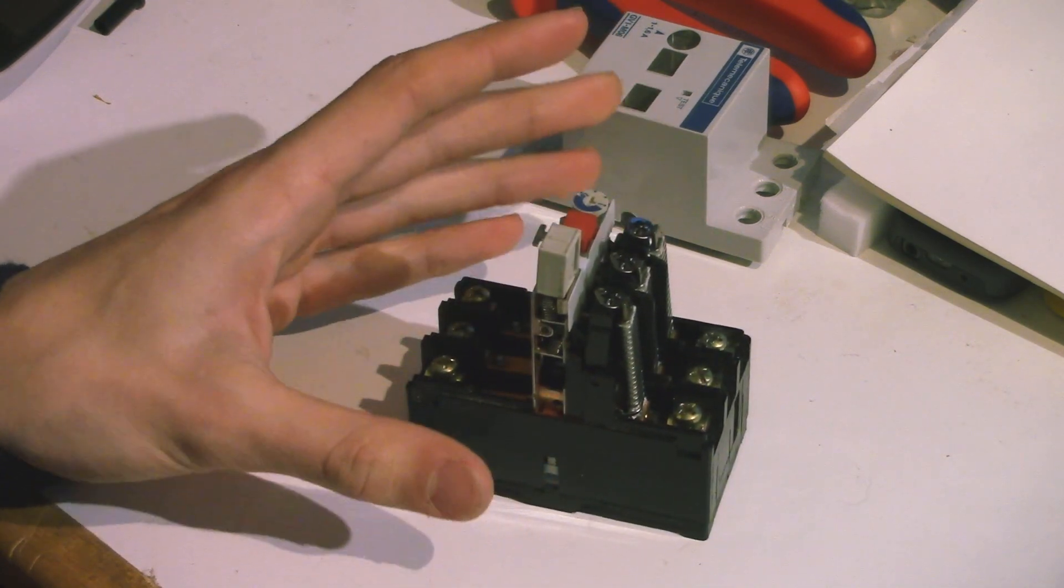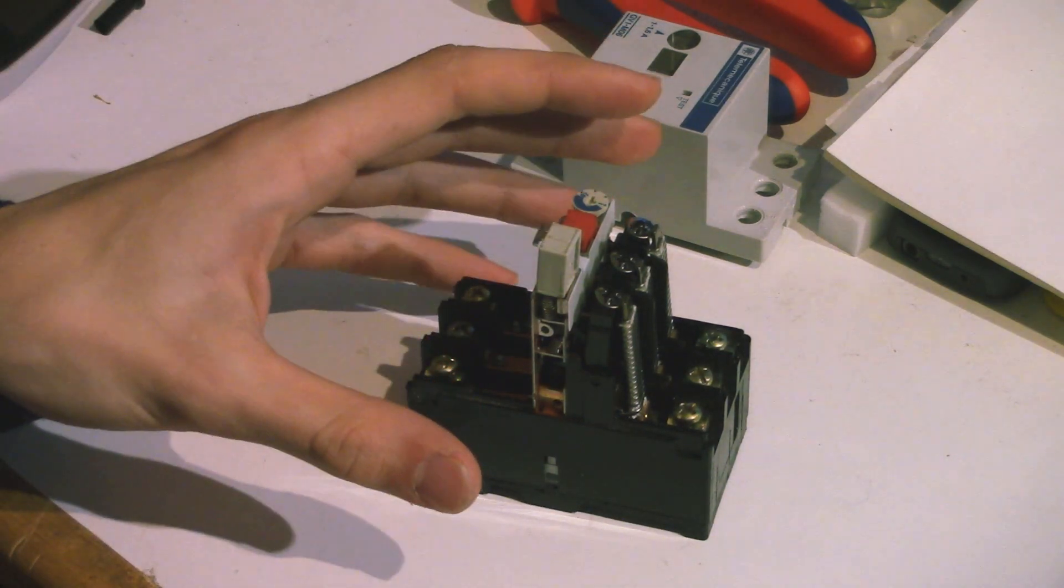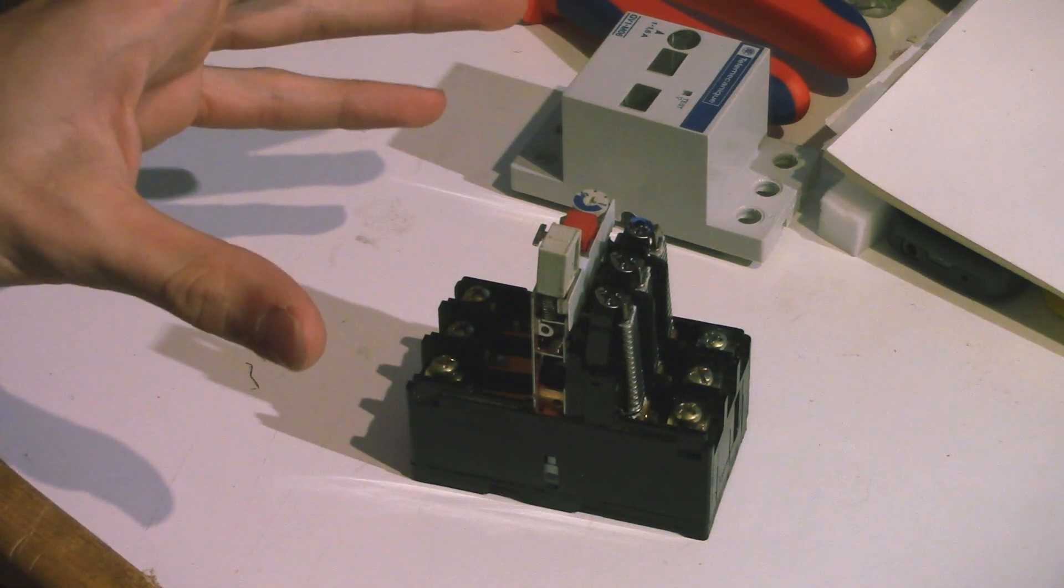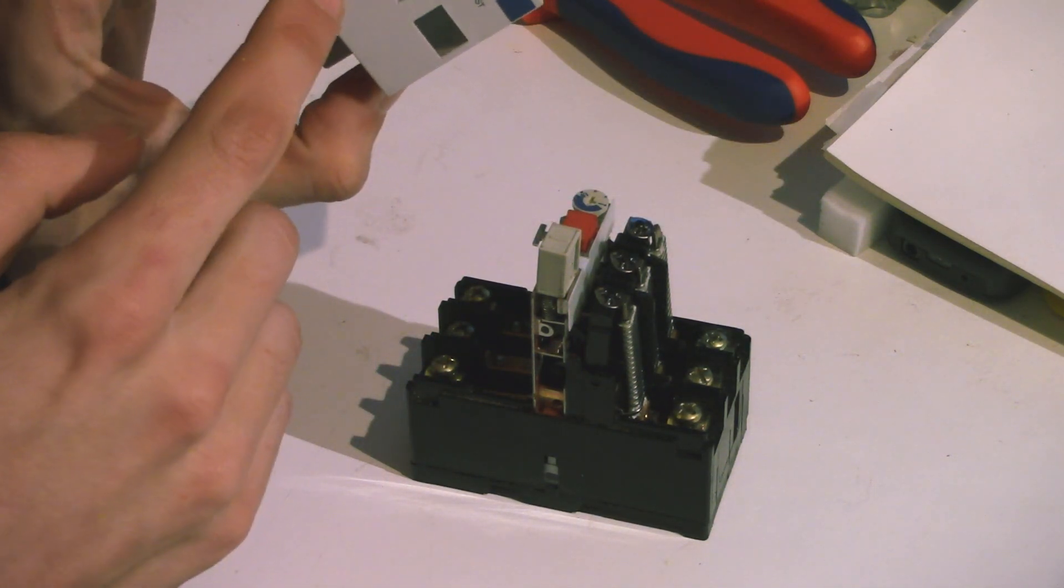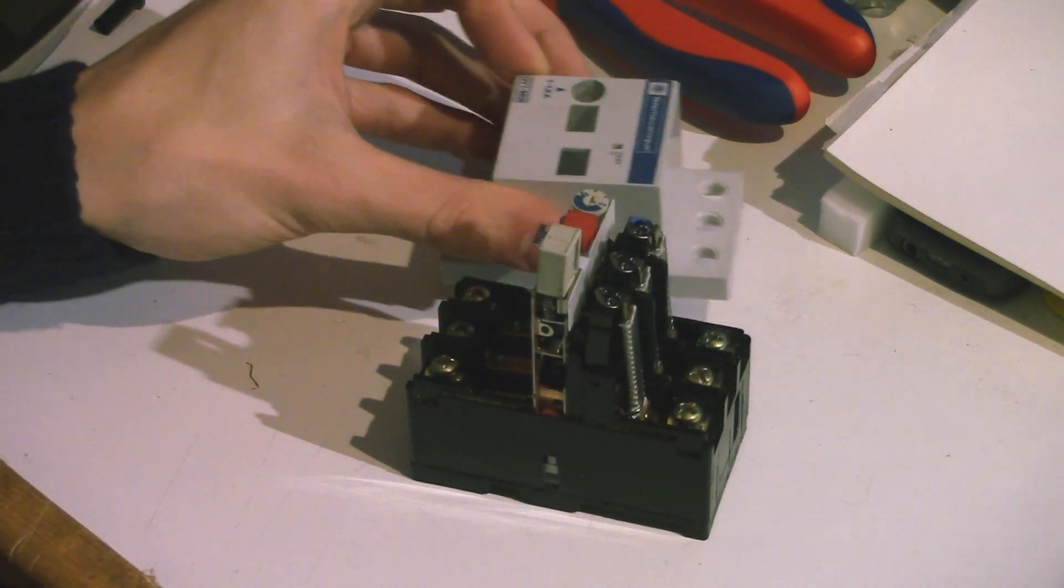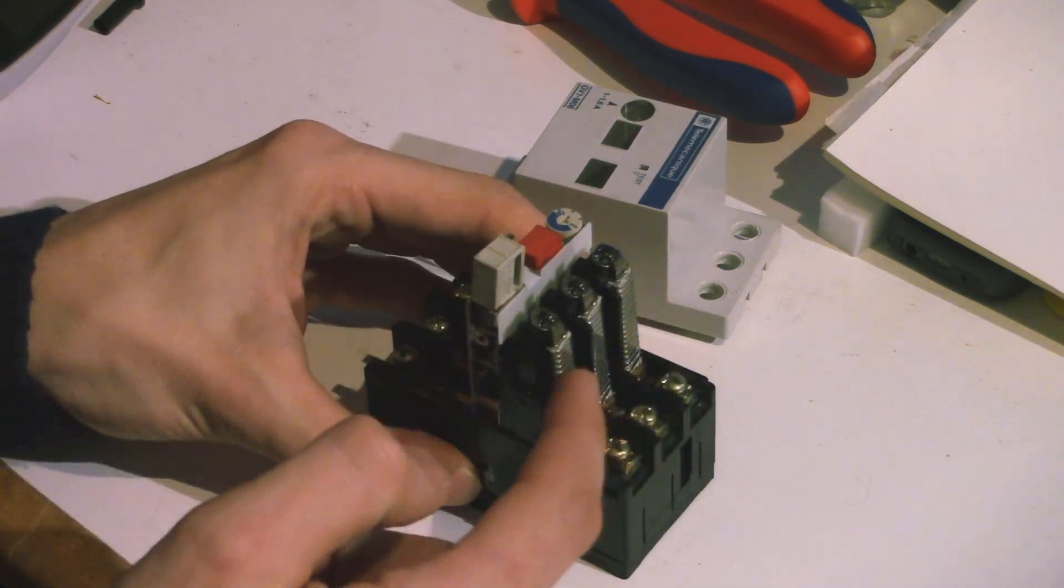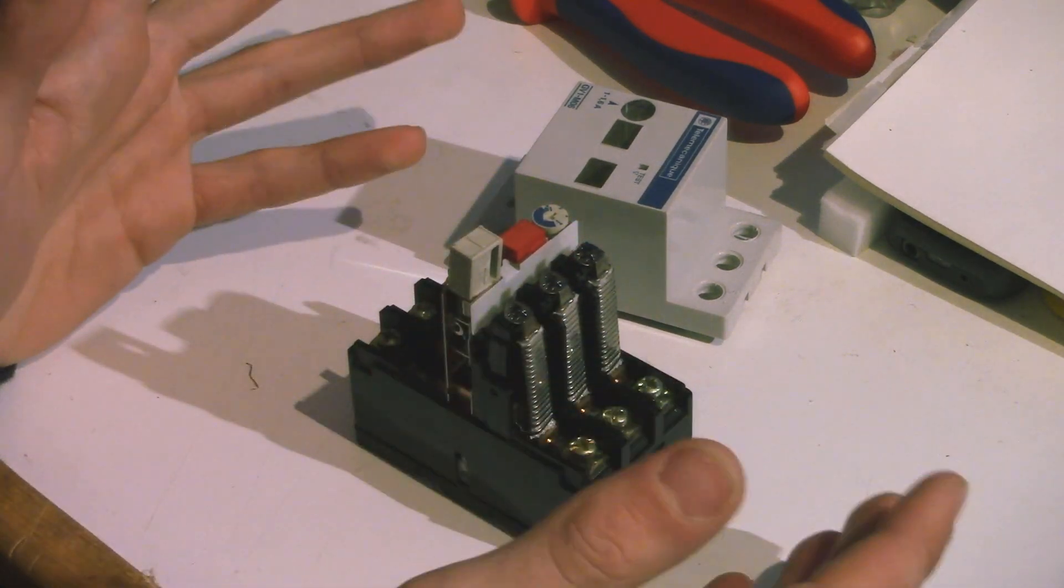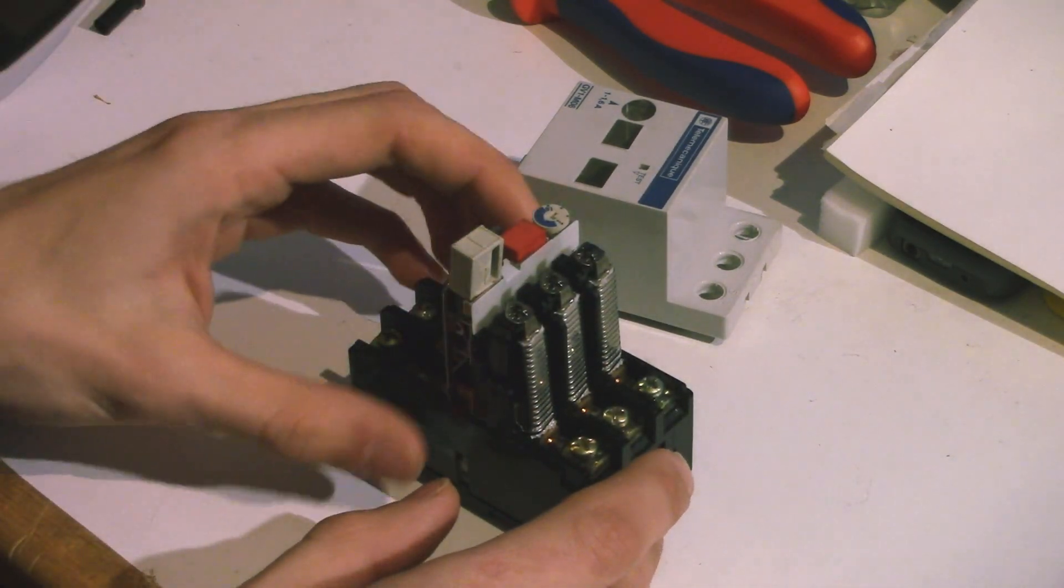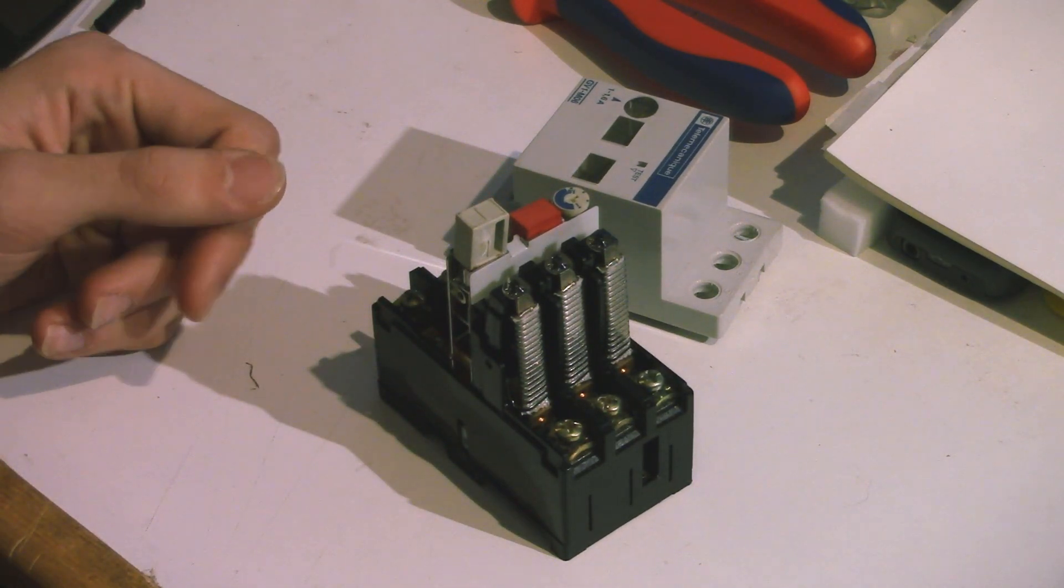So what happens when lots of electric current flows through this thing is these bimetallic strips start heating up and they start bending and they start pushing against this part of the mechanism, which then unlatches the spring. Now that takes a little while to happen. It might take a few seconds to happen. So it's not a very fast form of protection, but it is able to detect relatively low electric currents. So this one is rated for 1.6 amps, and this is able to detect anything slightly over 1.6 amps.